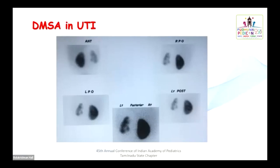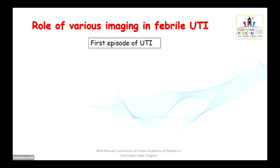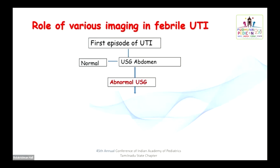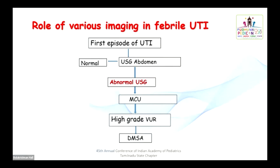Regarding the role of DMSA in UTI: Earlier guidelines said it could be done in the acute or chronic phase, but the 2021 guidelines changed this — there is no role for DMSA in the acute phase. In the acute phase, pyelonephritis appears as photopenic areas on DMSA scan. As per recent guidelines for a first episode of UTI, go for ultrasound. If normal in children more than 3 years of age, you can leave it. If there is an abnormal ultrasound finding, perform MCU 2–3 weeks later. If high-grade VUR (grades 3, 4, 5) is found, then do DMSA.